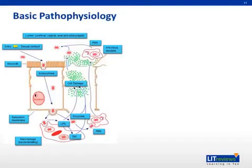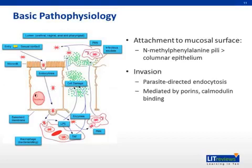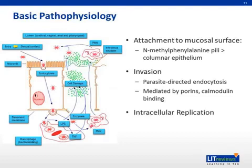Pathophysiology of gonorrhea infection has four main stages. The first is attachment to the mucosal surface, mediated by the pili, which attach directly to the columnar epithelium of the host mucosal surface. The next step is invasion, where the bacteria initiates parasite-directed endocytosis, allowing the gonorrhea access to the interior of the mucosal cells. Once inside, the third stage — intracellular replication — can occur.